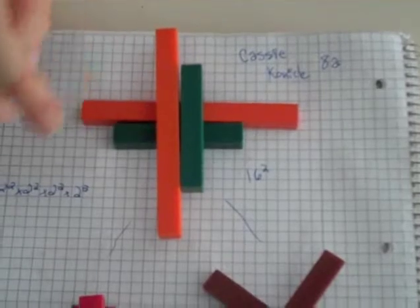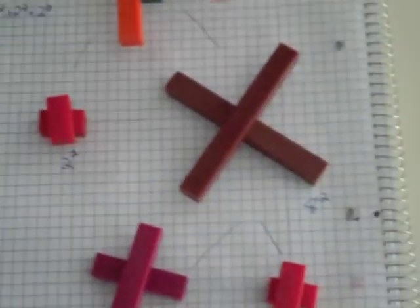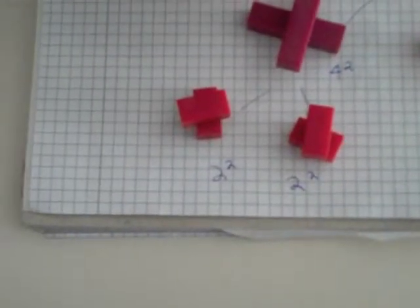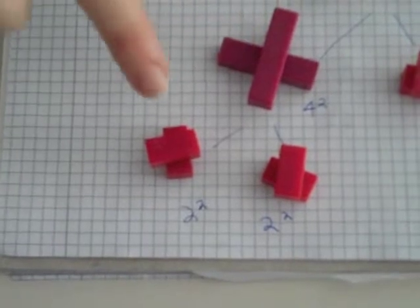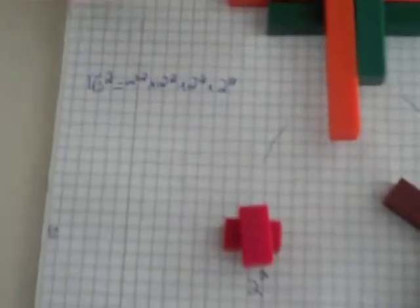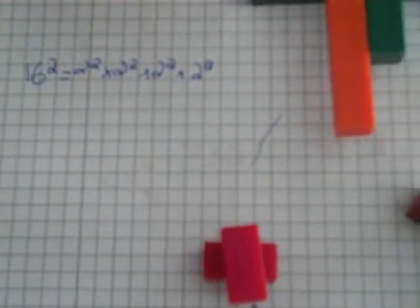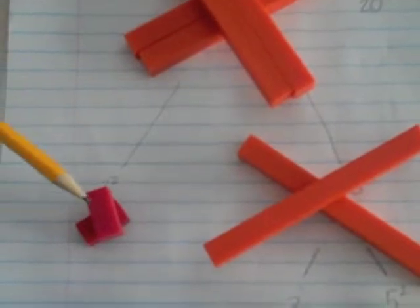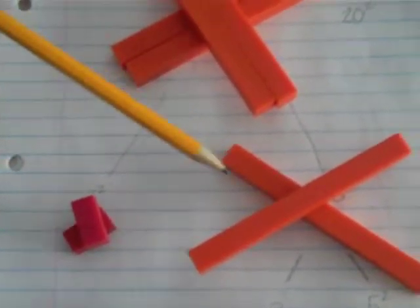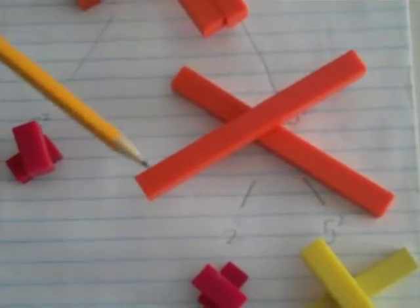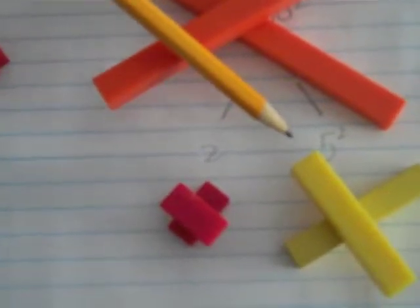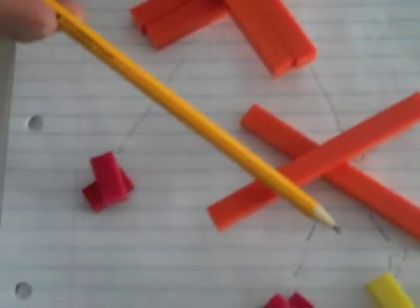which is 16 squared, which equals 2 squared times 8 squared. And 8 squared equals 4 squared times 2 squared, and 4 squared equals 2 squared times 2 squared. So 16 squared equals 2 squared times 2 squared times 2 squared times 2 squared. 2 squared is equal to 2 squared times 10 squared, but since 10 squared isn't a prime number, you can reduce it to 2 squared times 5 squared. So 20 squared equals 2 squared times 2 squared times 5 squared.